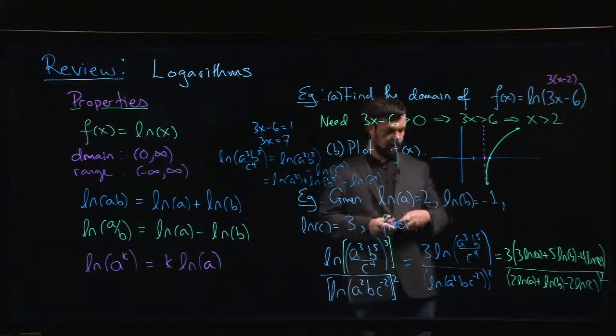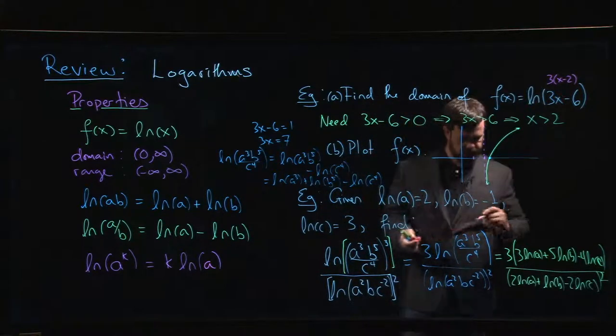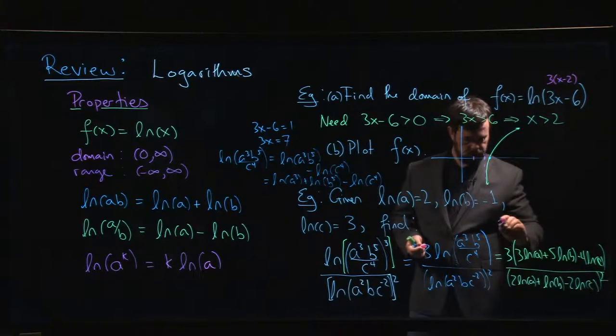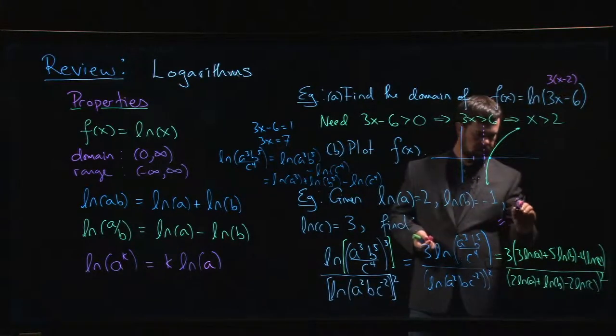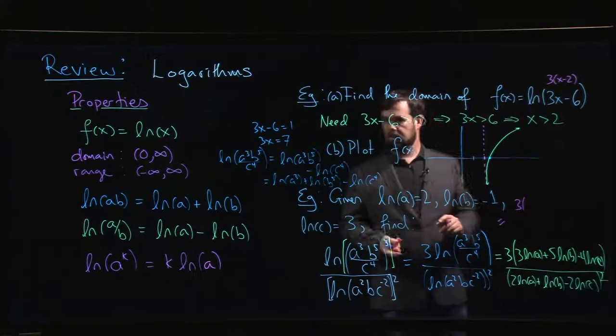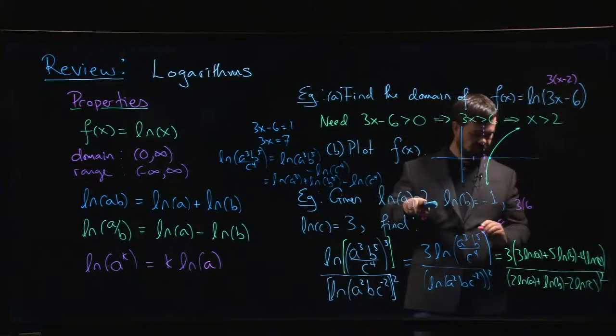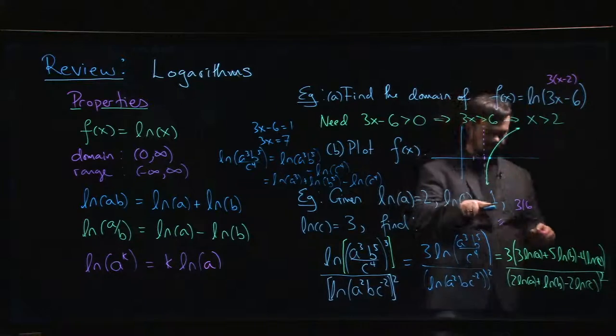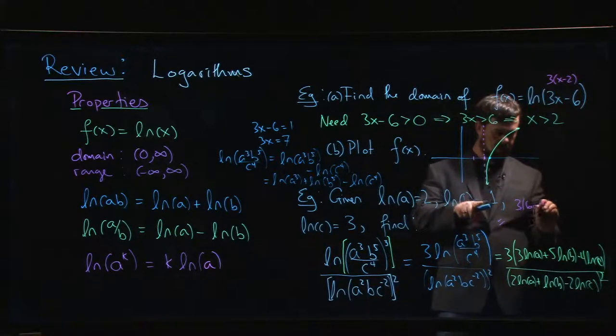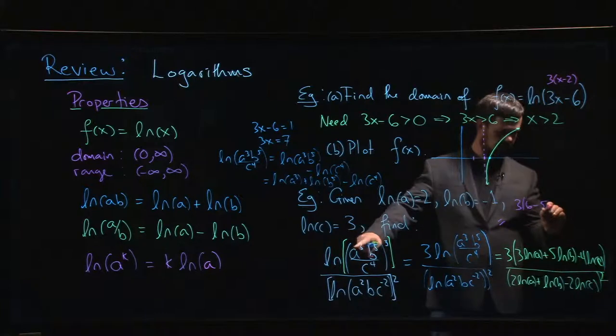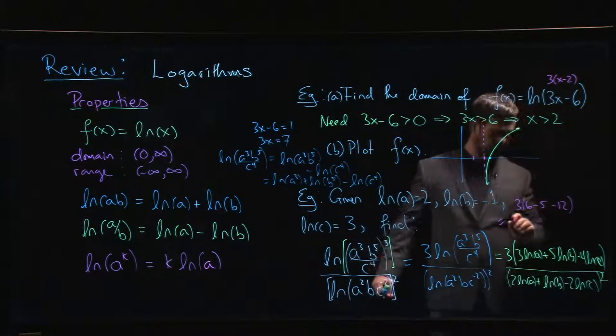Okay, and from here you can put your numbers in. I'm running out of boards, so maybe I'll put it just above. So what do we get? We get three times log a, so three times two is six. Five times log b, so five times minus one: six minus five. Minus four times three is minus twelve.